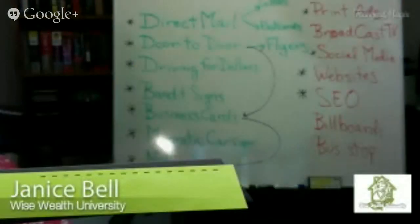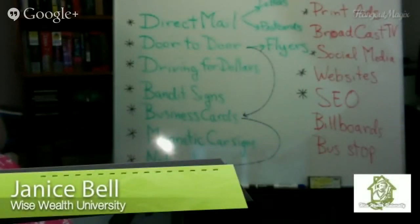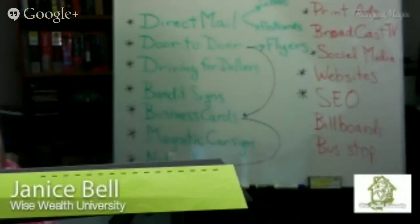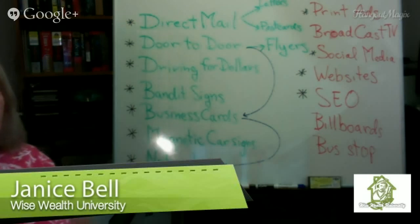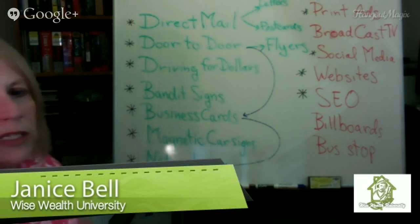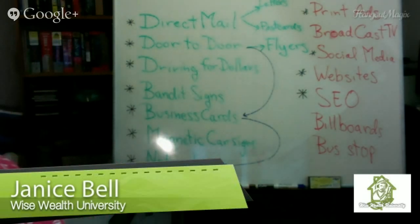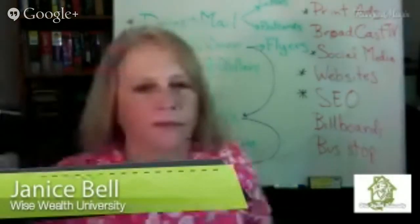The first method is direct mail, which includes letters and postcards. Some are fairly inexpensive. Next is door-to-door — going door to door and talking with people. Driving for dollars means driving around your neighborhood; not free but you can use your commute. Bandit signs cost a little bit. Business cards are a very inexpensive way to get your message out. Magnetic car signs are another inexpensive option. Networking can include flyers and business cards.